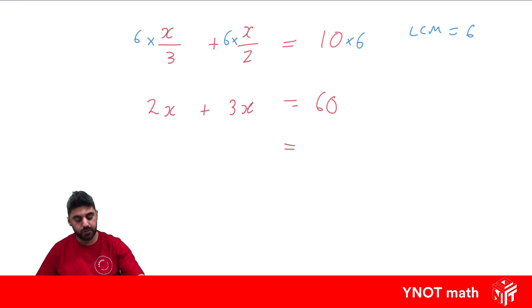We've got like terms on the left-hand side. 2x plus 3x is 5x. That equals 60. And now we just need to get rid of the 5 by dividing both sides by 5. 5 divided by 5 is 1. Equals under equals. x equals 12. Same as before. So feel free to use whatever method you like.